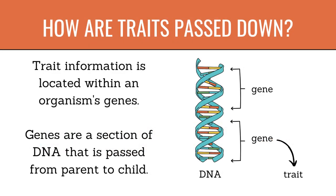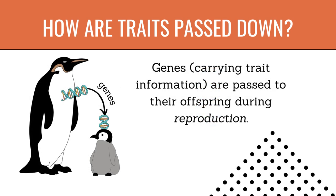How are traits passed down? Trait information is located within an organism's genes. Genes are a section of DNA that is passed from parent to child, carrying trait information to their offspring during reproduction.